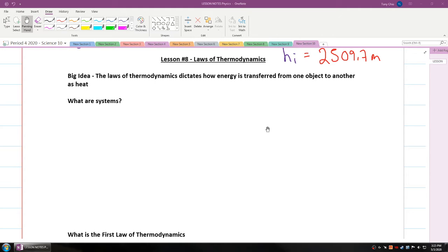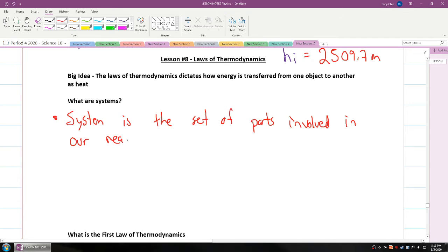So what are systems? Systems is a phrase we use in science that dictates what is part of the reaction or the thing that we're observing. So a system is the set of parts involved in our reaction or energy transfer, because everything else is the surroundings.